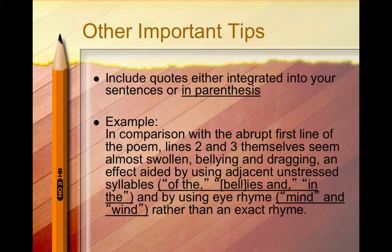Be sure that when you quote, quotes are smoothly and logically integrated into your own sentences. A strategy you could use is to include words or lines from the poem in parentheses as you comment on these in the main part of the sentence. Example: In comparison with the abrupt first line of the poem, lines 2 and 3 themselves seem almost swollen, bellying and dragging, in effect aided by using adjacent unstressed syllables — 'of thee,' 'bellies and,' 'in thee' — and by using an eye rhyme, 'mind' and 'wind,' rather than an exact rhyme. This helps remind readers of the poem and supports the analysis.